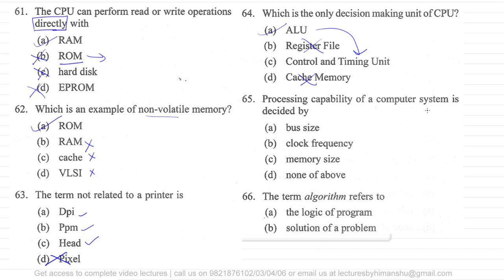Now for question number 65, they are saying processing capability of a computer is decided by. So the processing capability is generally dependent on your CPU, right? So on our CPU architecture also at the same time. Now here clock frequency, yes, somewhat we can decide processing capability. But that also depends on CPU architecture.